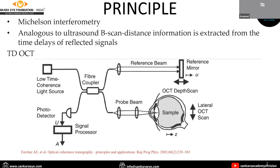A low coherence light source beam passes through a beam splitter, forming a reference beam and a probe beam. When these are reflected back, they are taken via a photodetector and processed into an electrical signal. Then with the back reflection and scattering, the image is formed.